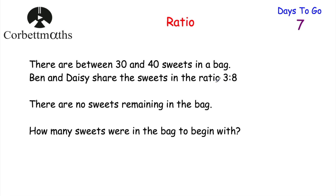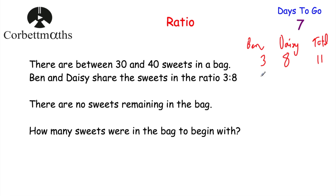Because they share the sweets in the ratio 3 to 8, for every 3 sweets Ben gets, Daisy gets 8 — so it could start at 11 sweets altogether, but that wouldn't work as there must be between 30 and 40. If we double it: Ben gets 6, Daisy gets 16, giving 22 total — still not in range. If Ben received 9 and Daisy 24 (multiplying by 3), that's 9 plus 24 equals 33 sweets, which is between 30 and 40.